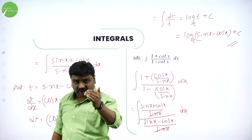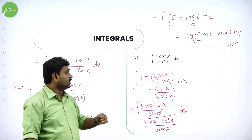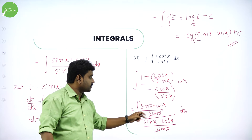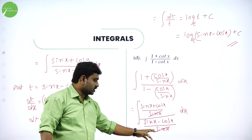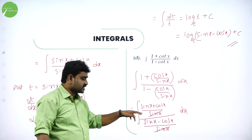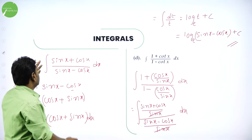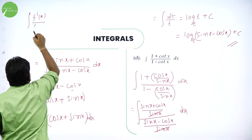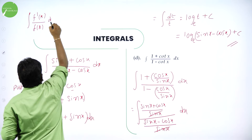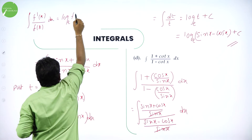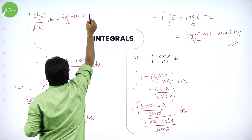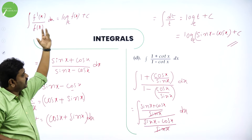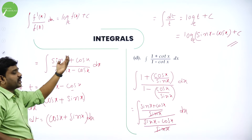So, here converting cot to cos by sin is the hint of the problem. Cot x I wrote it as cos x by sin x. Take LCM. Whole thing LCM is sin x. Sin x into 1 is sin x plus cos x. Denominator also sin x is the LCM, sin x and sin x cancel. Now, it is in the form f dash x by f of x. You know integration of f dash x by f of x whenever you have: the answer is log of denominator, meaning if numerator is differentiation of denominator, then answer is log of denominator.